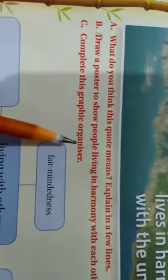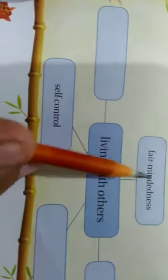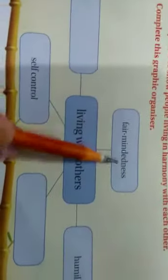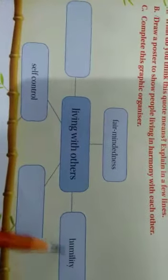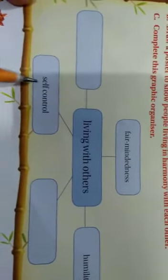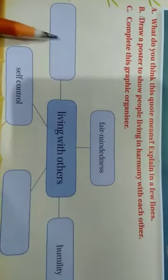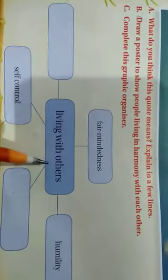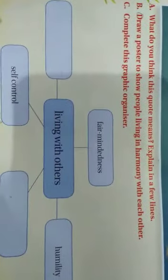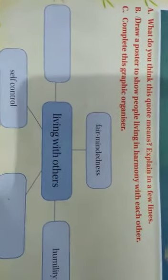The next activity is to complete this graphic organizer. The topic is 'Living with Others.' We have three given points: fair-mindedness, humility, and self-control. One field is left blank for you to fill in. You have to add a point based on what is important when living with others in harmony.